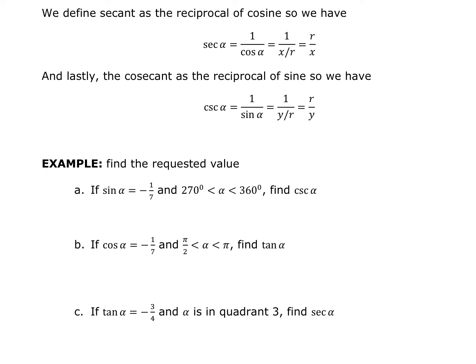If we are given the sine of some angle as a ratio and they're asking for the cosecant, cosecant is the reciprocal of sine — same as 1 over sine of alpha. So the cosecant of alpha is just the reciprocal of the sine ratio. For example, if sine gives negative 1/7, then cosecant is negative 7 over 1. No extra work needed.